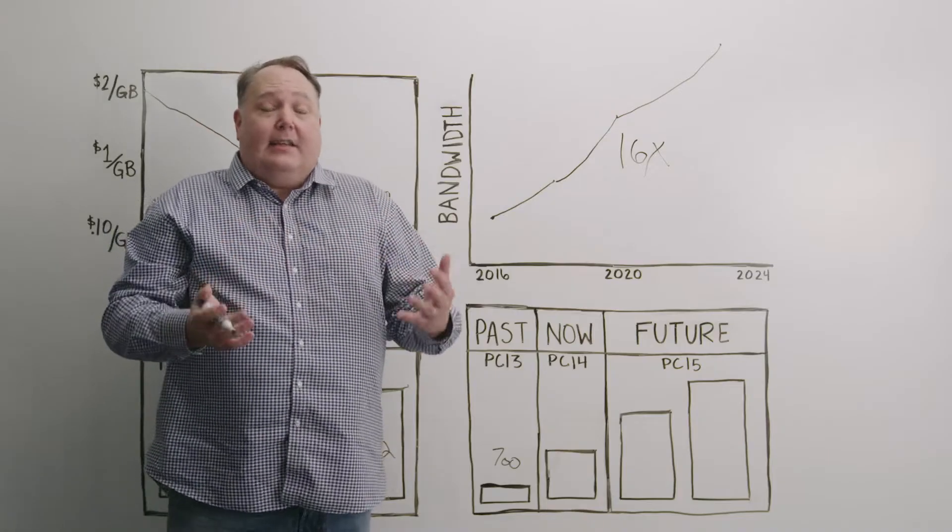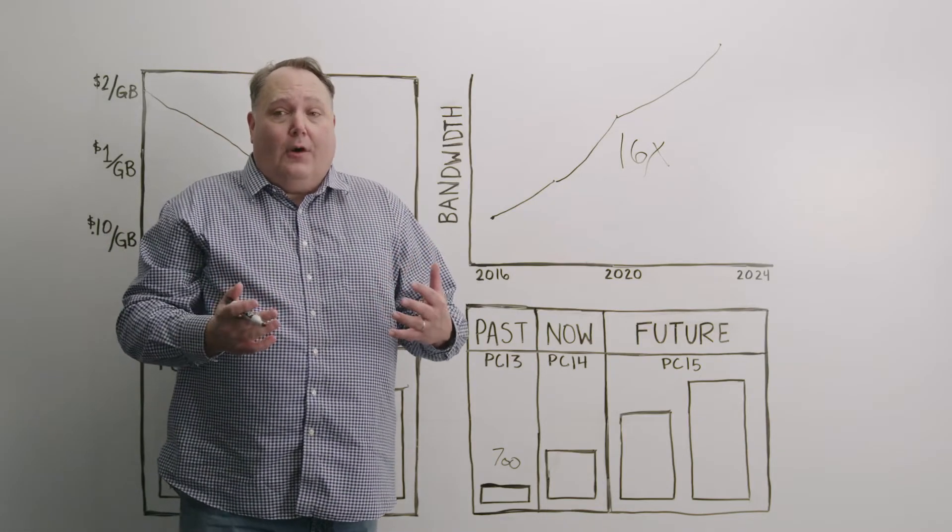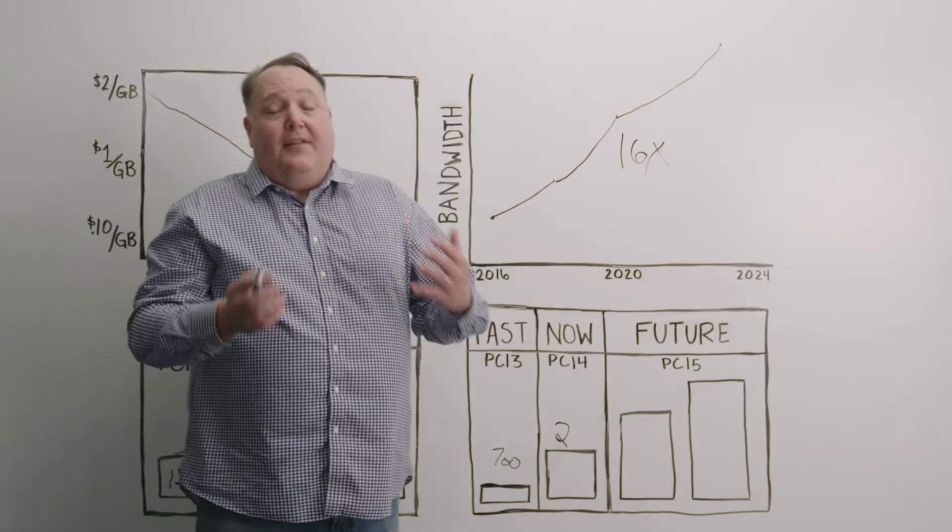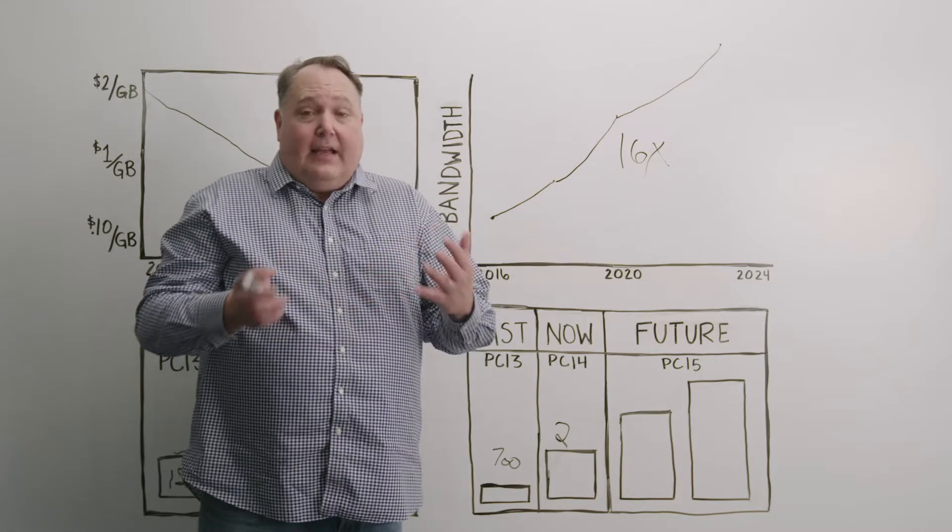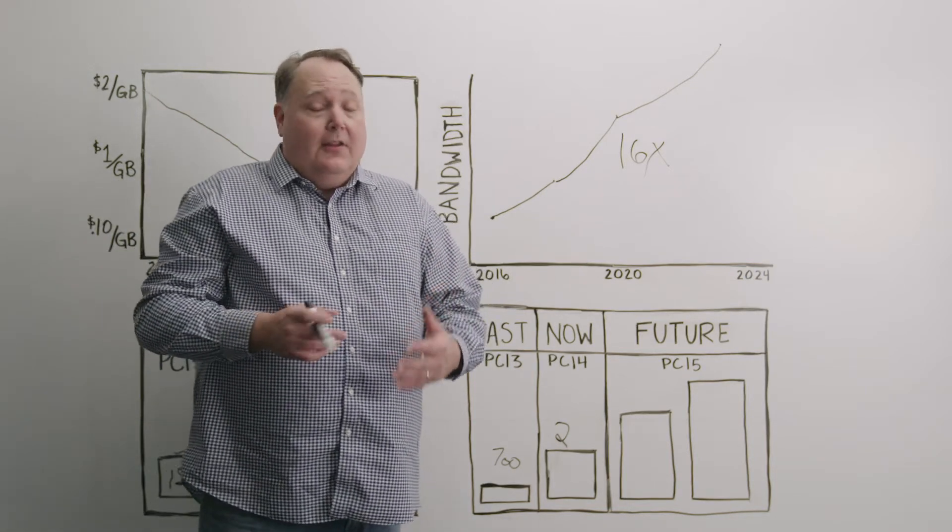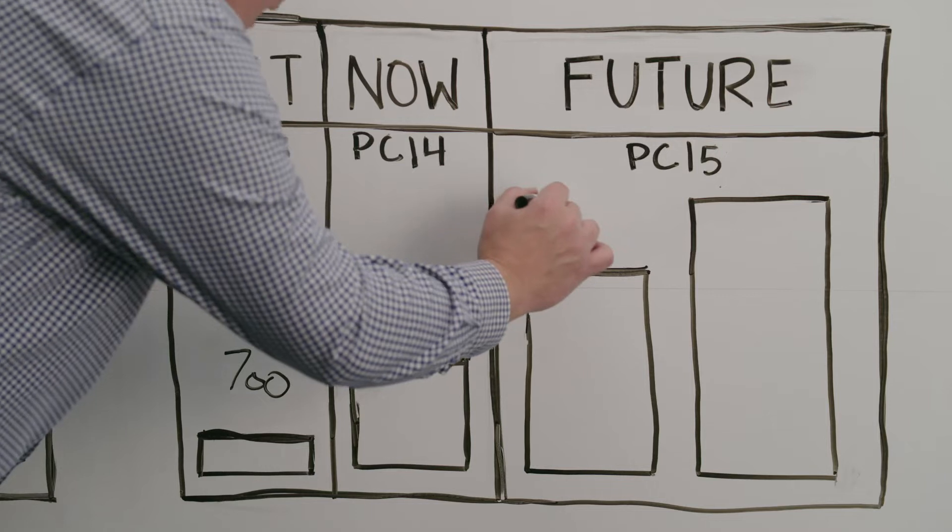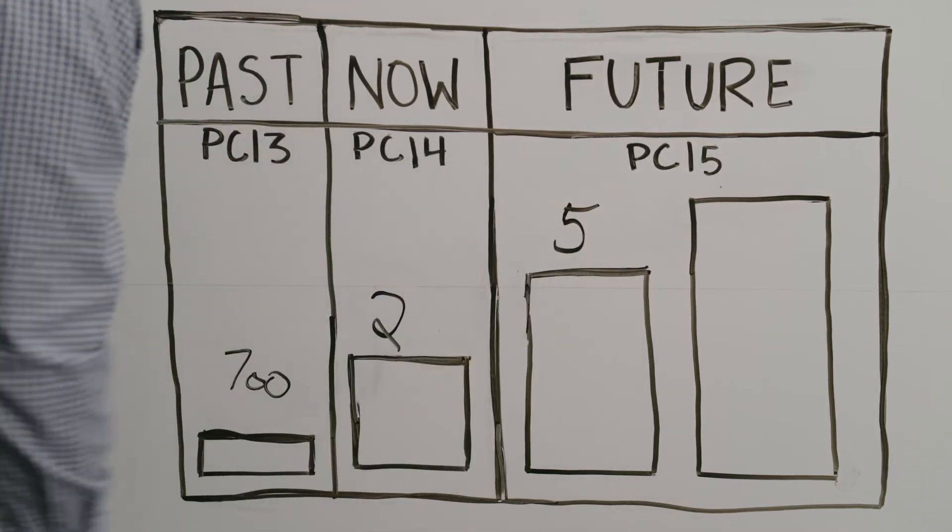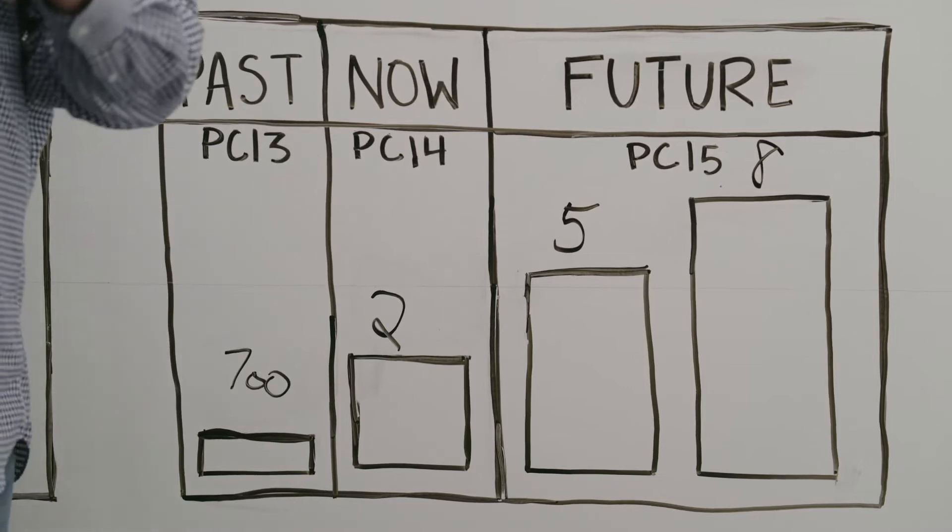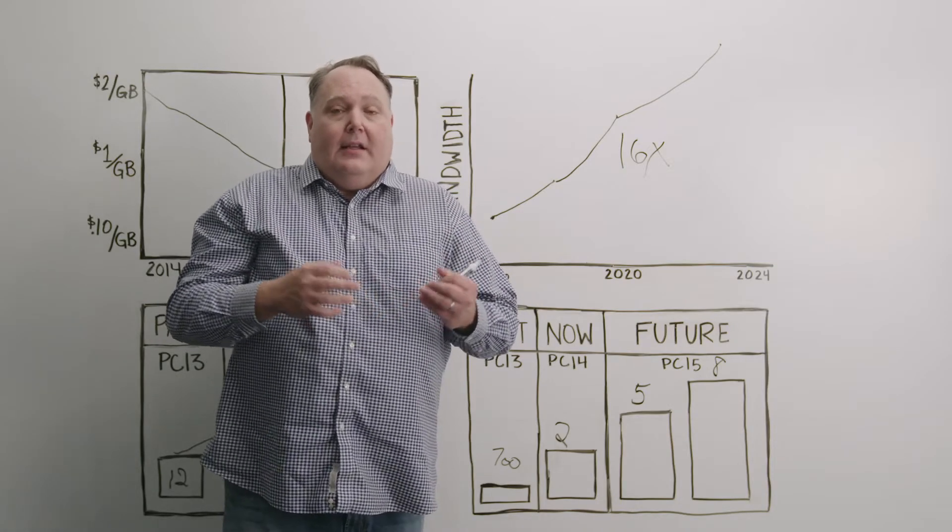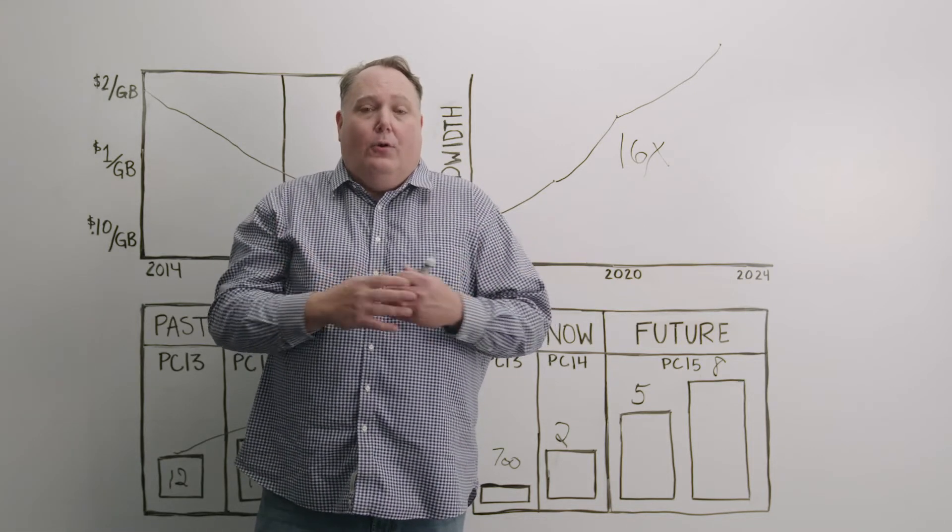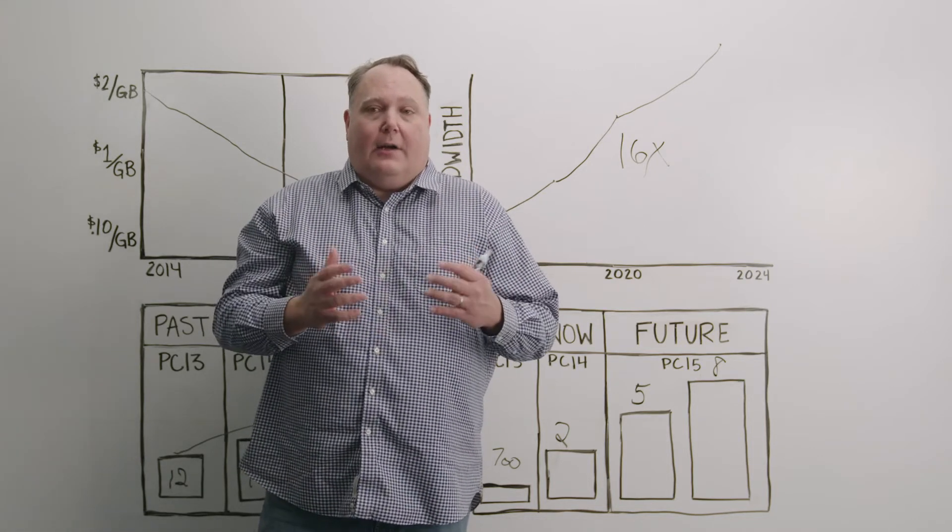With the Ice Lake platform with PCI 4, this moved to 2 terabits per second. And then with PCI 5 and the Sapphire Rapids platform, or the AMD Genoa platform, this moves to 5 terabits on the Intel platform and 8 terabits per second on the AMD platform. These are just dramatic increases in throughput and deliver all the fuel we need for our modern data warehouse.